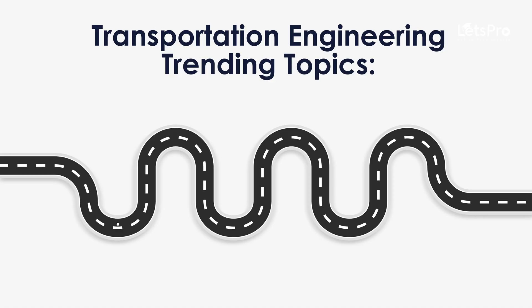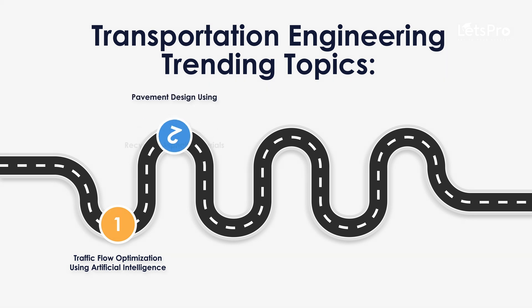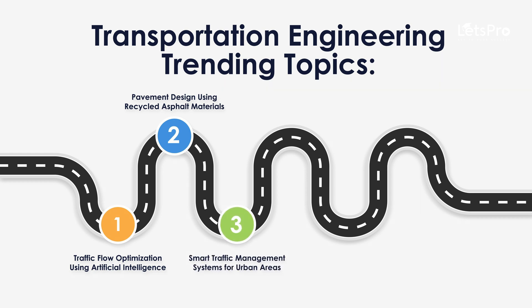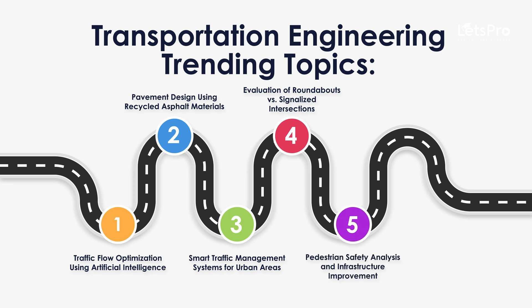Trending topics include traffic flow optimization using artificial intelligence, pavement design using recycled asphalt materials, smart traffic management systems for urban areas, and evaluation of roundabouts versus signalized intersections.